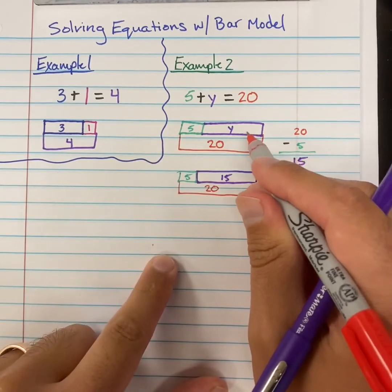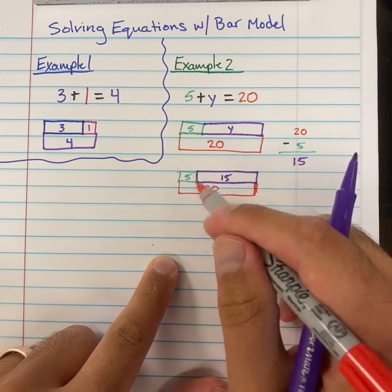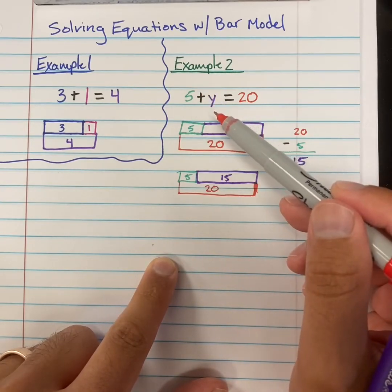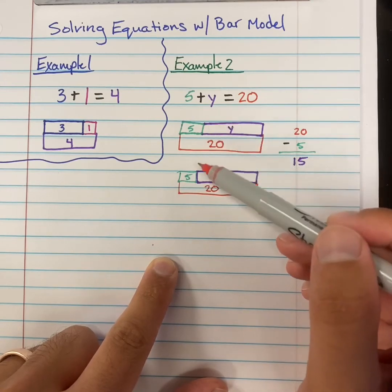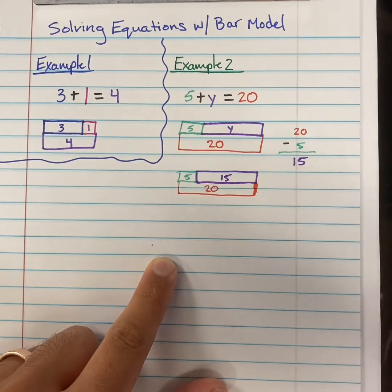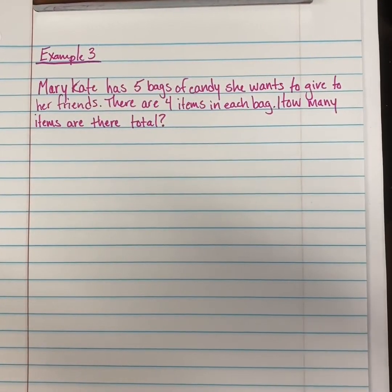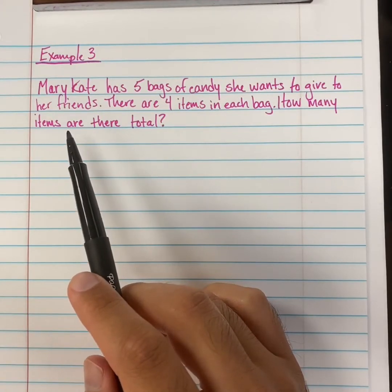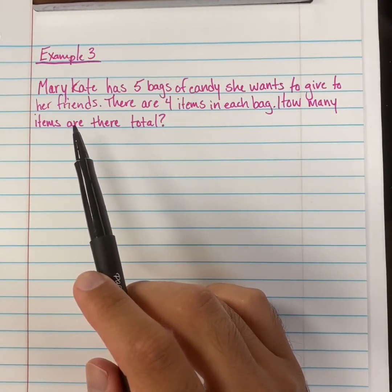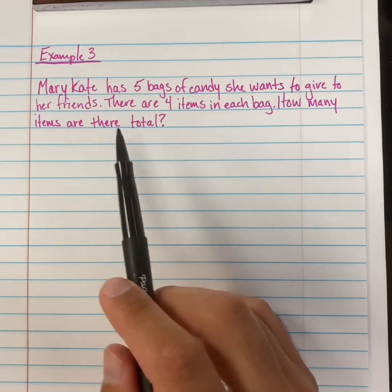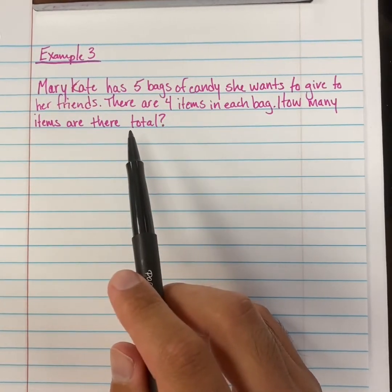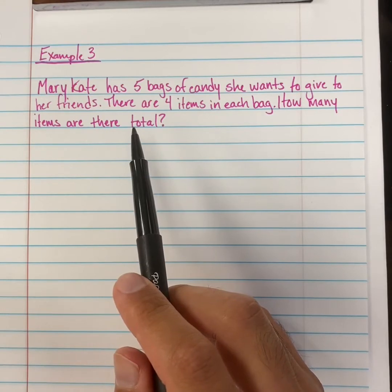This is how you can use the bar model to graph out an equation — at least an equation that has addition in it. Now let's move on to what would happen if we had multiplication in a problem. We're going to look at modeling multiplication or division with our bar model. Our story problem is: Mary-Kate has 5 bags of candy she wants to give to her friends. There are 4 items in each bag — how many items are there total? The number we don't know is the total, and that's what we are trying to find.